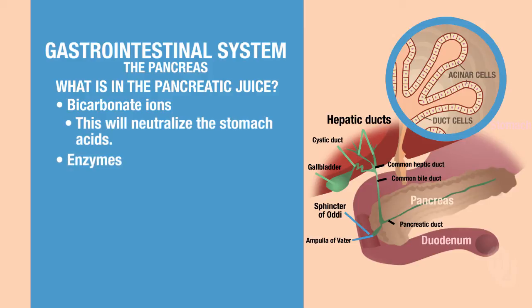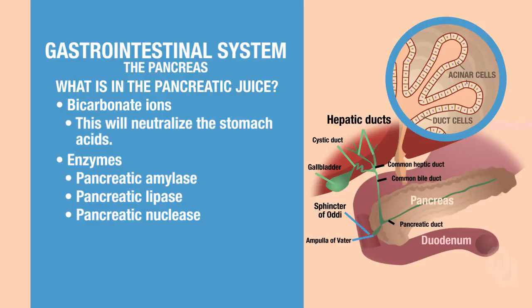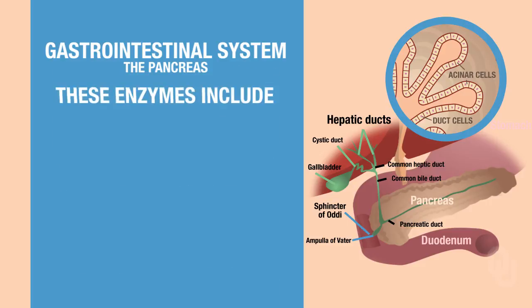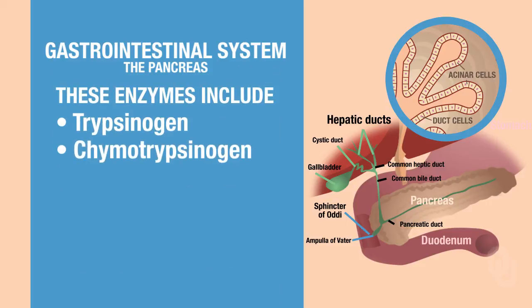The enzymes found in the pancreatic juice include pancreatic amylase, pancreatic lipase, pancreatic nuclease, and what are called zymogens. Zymogens are inactive proteolytic enzymes — they're inactive until they get into the duodenum, where they become activated. These enzymes include trypsinogen, chymotrypsinogen, and procarboxypeptidase.